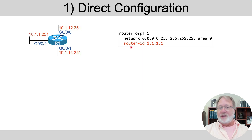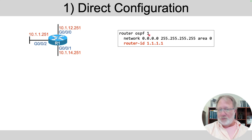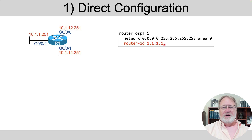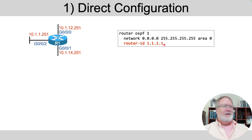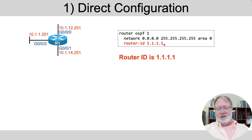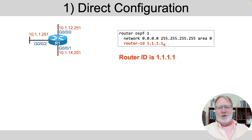We'll start with direct configuration — rule one. You type the command 'router ospf' with the process ID to enter router configuration mode, then type the 'router-id' command with a number, which configures the router ID you want to use. It's a dotted decimal number — or it could be a plain decimal number without dots. In this case, the router ID that R1 would use based on that first rule would be 1.1.1.1.